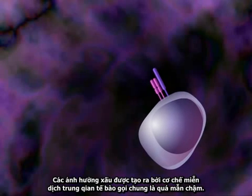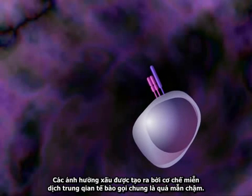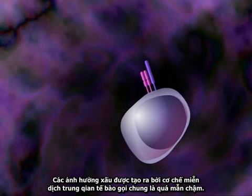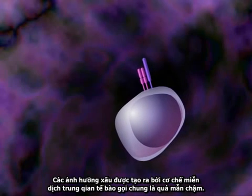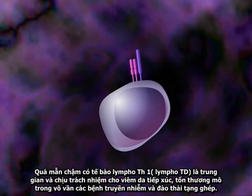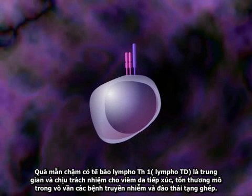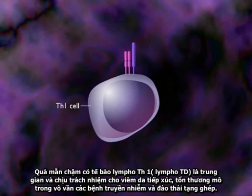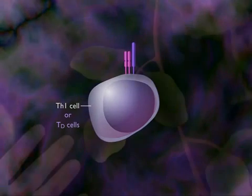Harmful effects produced by the mechanisms of cell-mediated immunity are referred to as delayed hypersensitivity. Delayed hypersensitivity is mediated by TH1 cells, also called TD cells, and is responsible for contact dermatitis, tissue damage in a variety of infectious diseases, and rejection of tissue grafts.